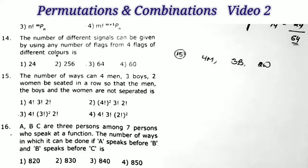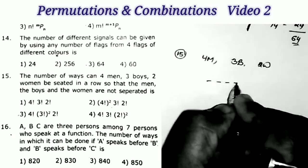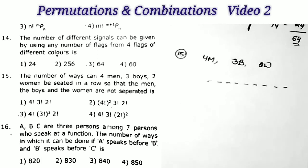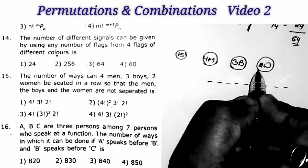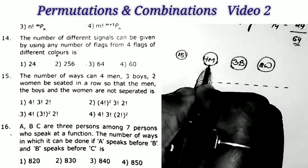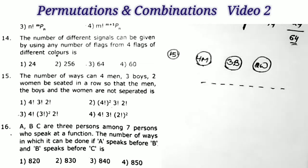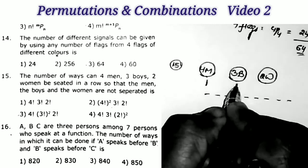Next question, sum number 15: the number of ways four men, three boys, and two women can be seated in a row so that the men, boys, and women are not separated. Not separated means the four men come together, the three boys come together, the two women come together. Not separated means they come together, and coming together means we treat each group as one unit. So we take four men as one unit, three boys as one unit, and two women as one unit.